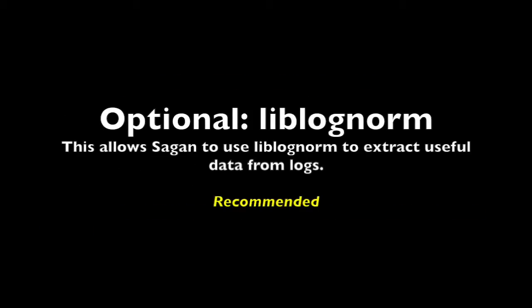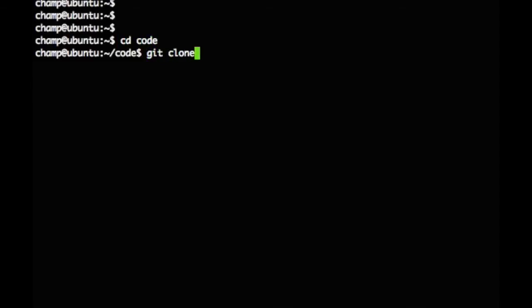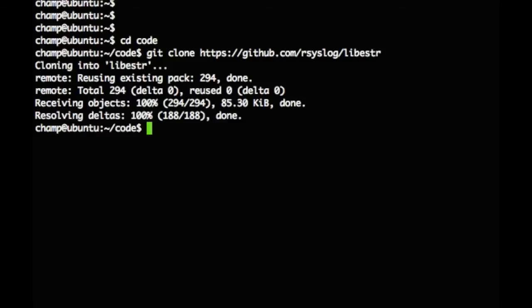LibBlogNorm is one of the ways Sagan is able to extract useful data such as IP addresses, ports, and usernames from log messages. This is known as log normalization. While this library is not required, it is recommended. I'm using Git to download libestr, or libestring, from GitHub, which is a dependency of LibBlogNorm. I'll then compile and install LibEstring.